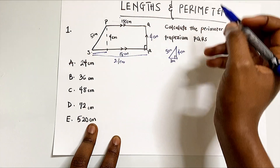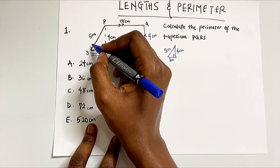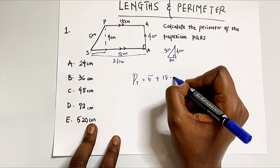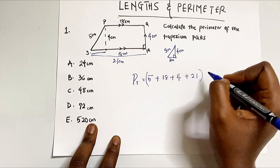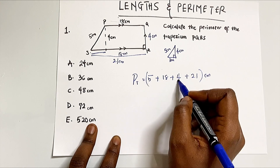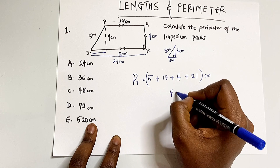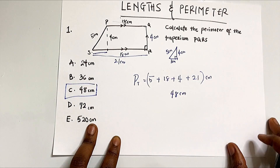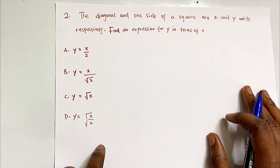Now that we have all four side lengths, we add them: perimeter = 5 + 18 + 4 + 21. Five plus four is nine, nine plus twenty-one is thirty, thirty plus eighteen is 48 cm. That's option C.